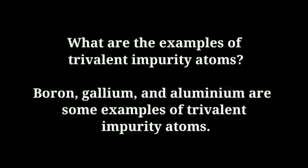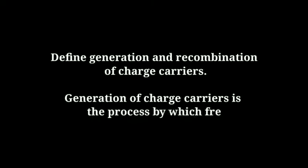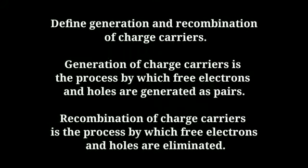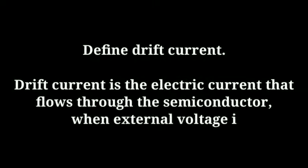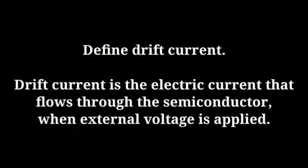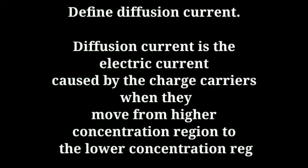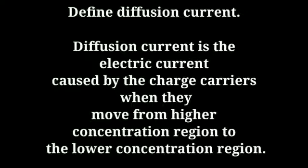Define generation and recombination of charge carriers. Generation of charge carriers is the process by which free electrons and holes are generated as pairs. Recombination of charge carriers is the process by which free electrons and holes are eliminated. Define drift current: drift current is the electric current that flows through the semiconductor when external voltage is applied. Define diffusion current: diffusion current is the electric current caused by charge carriers when they move from a higher concentration region to a lower concentration region.